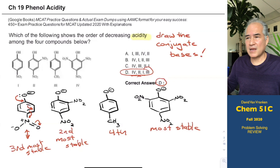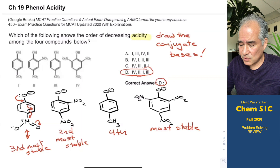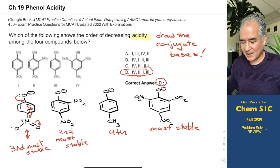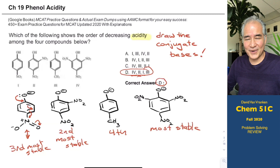The only way to judge acidity — really, the acidity of neutral compounds — is to draw the conjugate base of those compounds. Look at how stable those conjugate bases are: anything that generates a stable conjugate base is likely to be acidic because it wants to generate that stable conjugate base. That's what allows us to sort and rank these various phenolic compounds by acidity. When I ask questions about acidity, you have to go through all this work of drawing the conjugate bases. There's no escape from that.